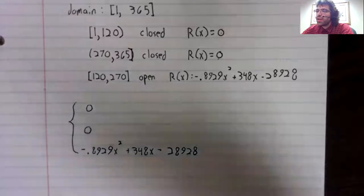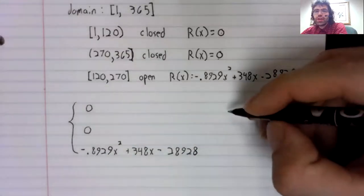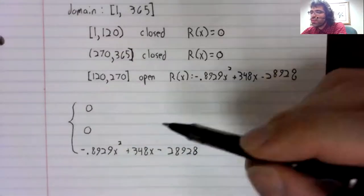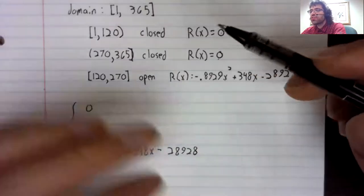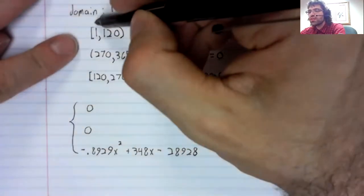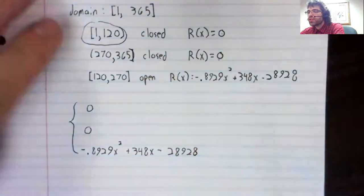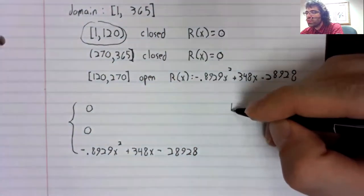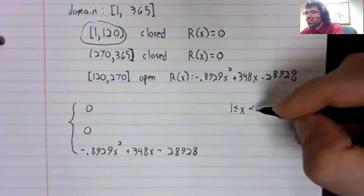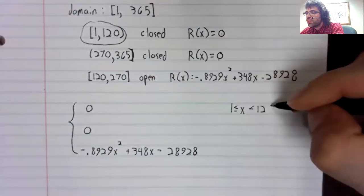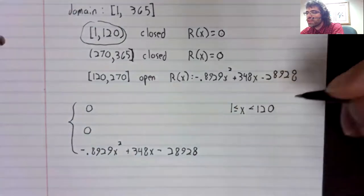And then over here, you'd say when we're in each of these pieces. So this first piece comes from this interval, x is between one and 120.